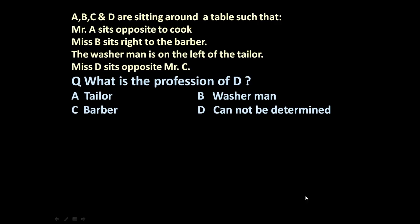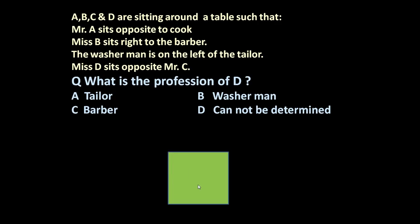So friends, to answer this question, first let us draw a square table. This is a square table. Now let us go statement wise. Mr. A sits opposite to cook. You can start from any point. If A is here, so cook is here. A and cook they are sitting opposite to each other.